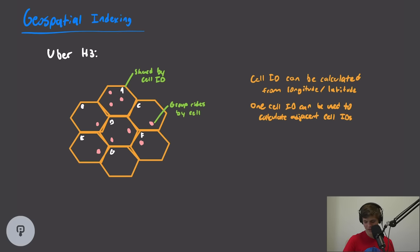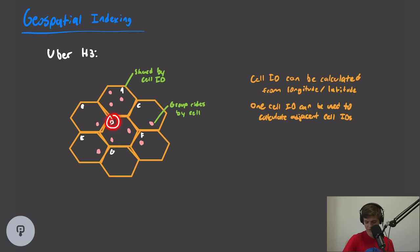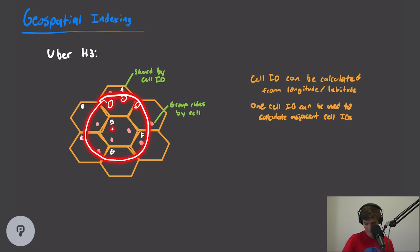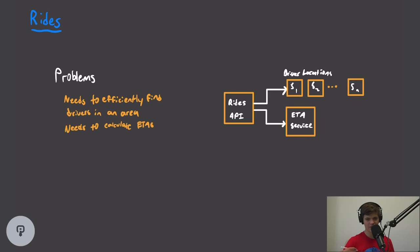H3 groups all drivers into these hexagonal cells, so we can efficiently look up a specific cell and all drivers within it. Cell IDs can be calculated from longitude and latitude, and one cell ID can be used to calculate adjacent cell IDs. So if a rider is in cell D, they can look up all seven surrounding hexagons, draw a circle around their position, find all rides within that radius, and use the ETA service to find which driver is closest.